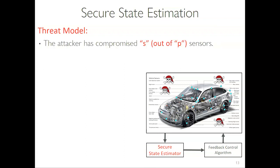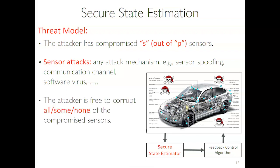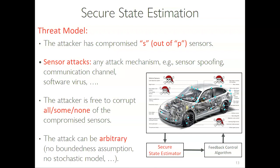The threat model: you have P sensors in your system, S of which have been compromised. Compromise can mean a physical attack, someone intercepting the communication line, a software virus, or anything else. The attacker has access to S channels and can attack all of them at once, some of them, or change strategy at any time. We don't know a priori what the attacker will do — no stochastic models, no bounded assumptions whatsoever.